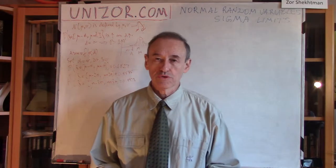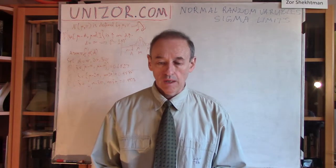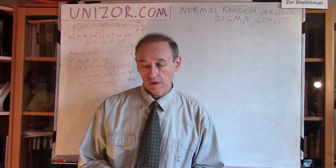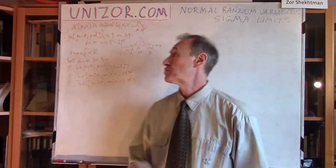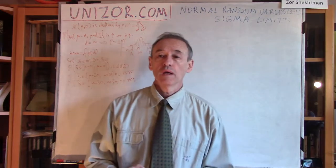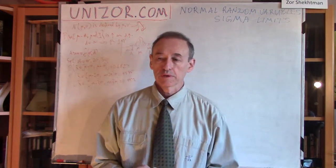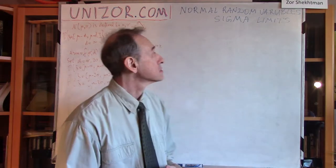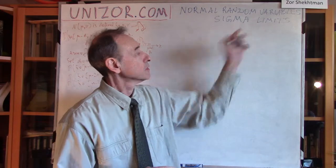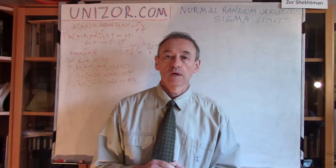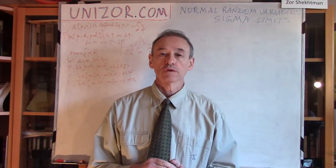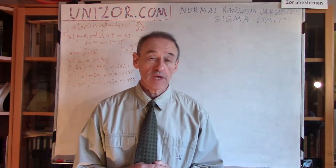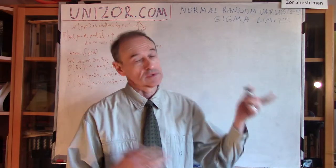Hi, I'm Zor. Welcome to Unizor Education. We continue a course of advanced mathematics for teenagers. The course is presented on Unizor.com. This lecture is part of the theory of probabilities topics, and we will talk about normal distribution, normal random variables, and especially about the evaluation of values of normal random variables using standard deviation — sigma. That's why it's called sigma limits.